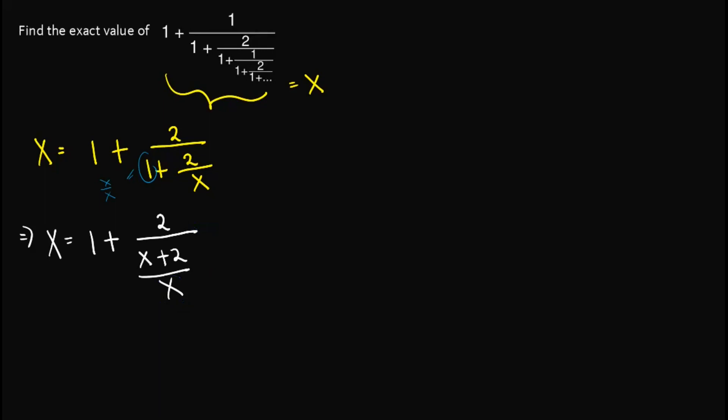So wait, my mistake. This one out here should be 1. Yep, this one should be 1 as seen in the problem. And so this one is equal to x equals 1 plus x over x plus 2.